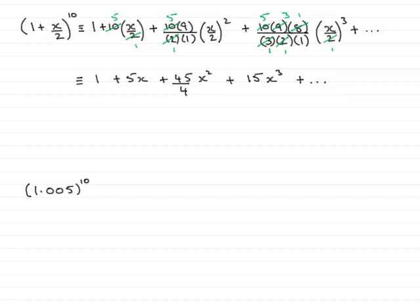So I'm just going to do a little bit of work before we start the expansion. I'm going to let 1 plus x over 2 equal 1.005. So if I subtract 1 from both sides, we get x over 2 equals 0.005.